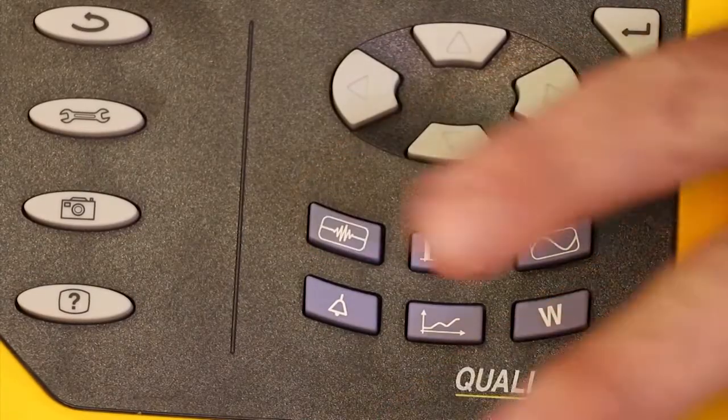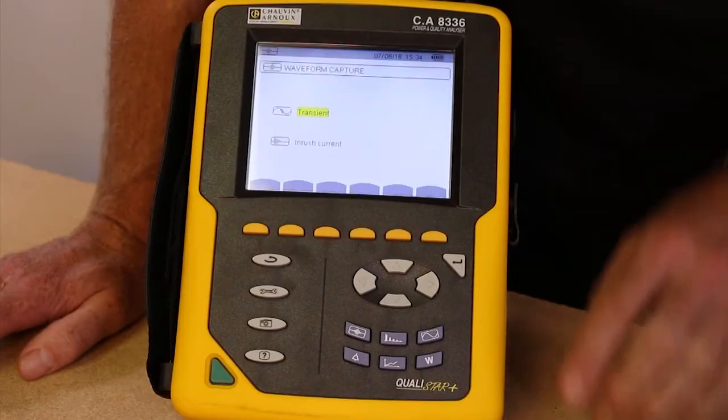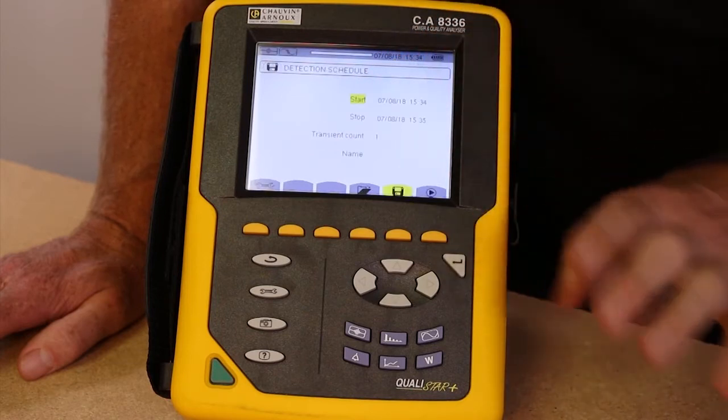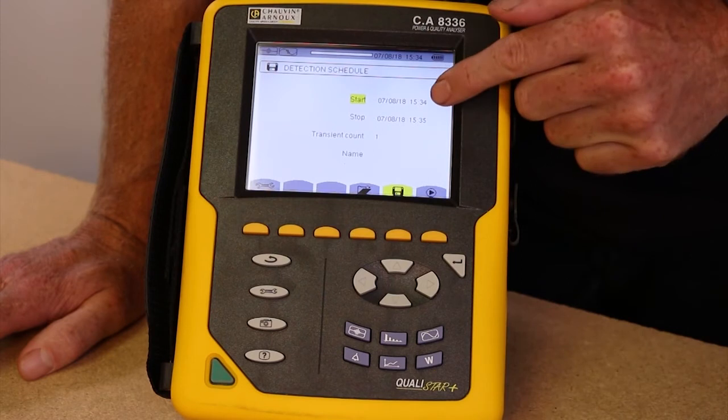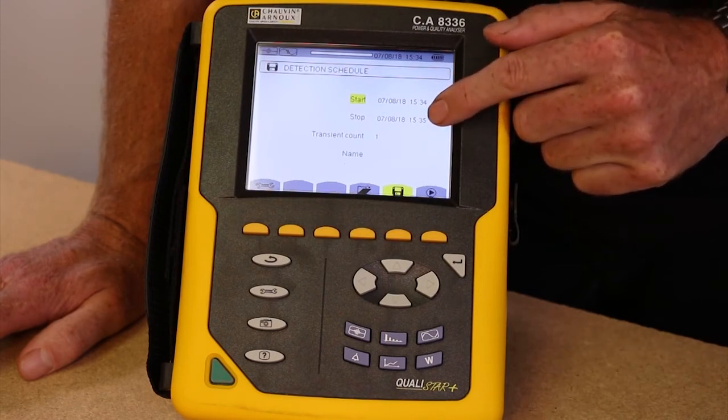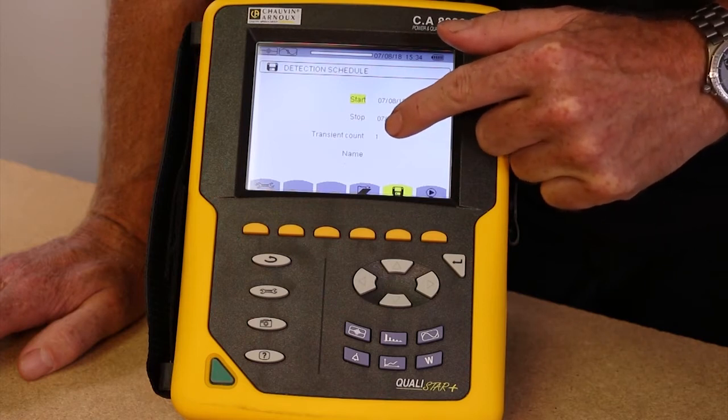The next mode key along shows us the transient and inrush currents start and stop times. This allows us to pick the point in time where I'd like the product to start and stop monitoring transients, and how many I'd like to monitor, starting from 1 up to 210.